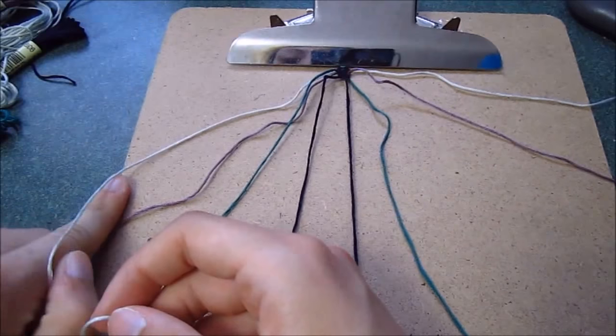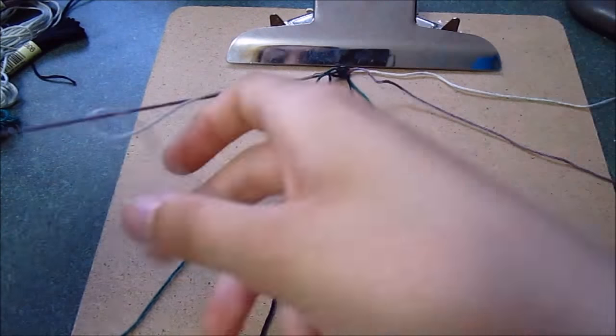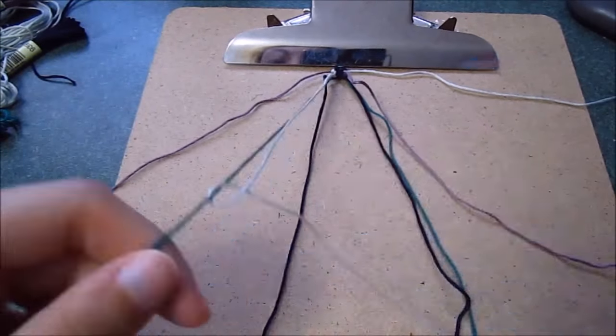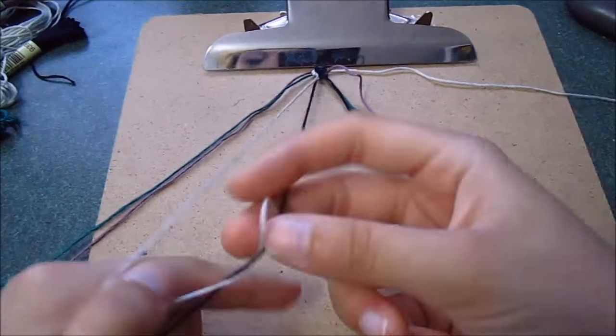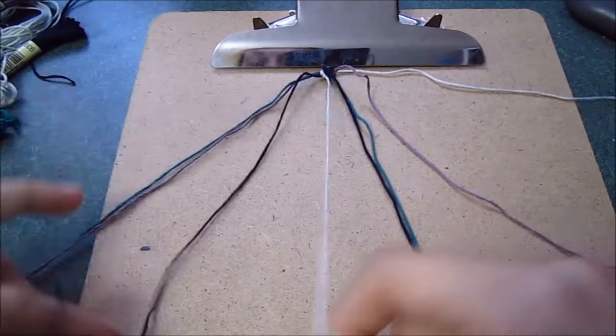Using the next string on the far left, you can do the exact same to complete another row. So keep doing this until you have the length of friendship bracelet that you would like.